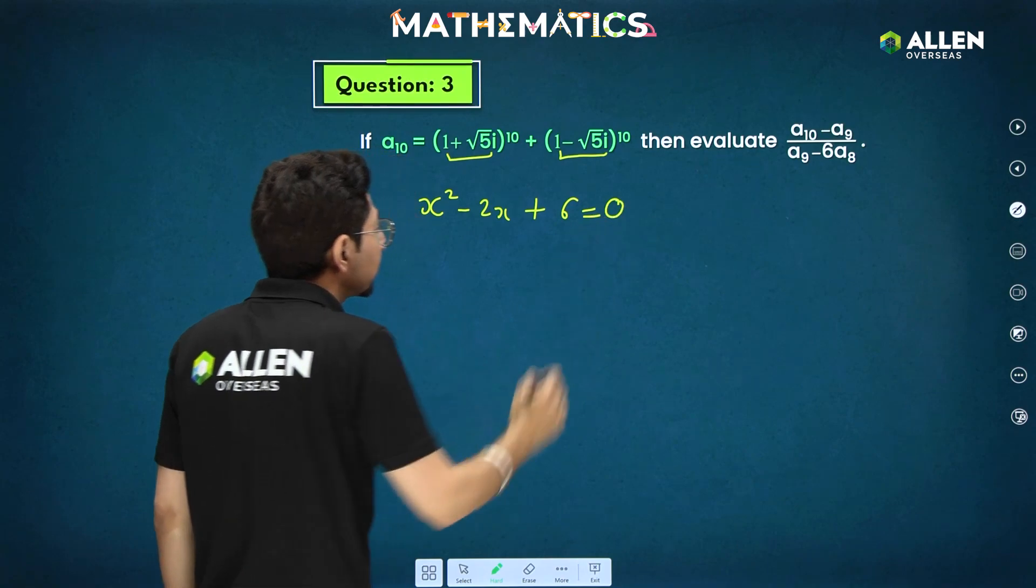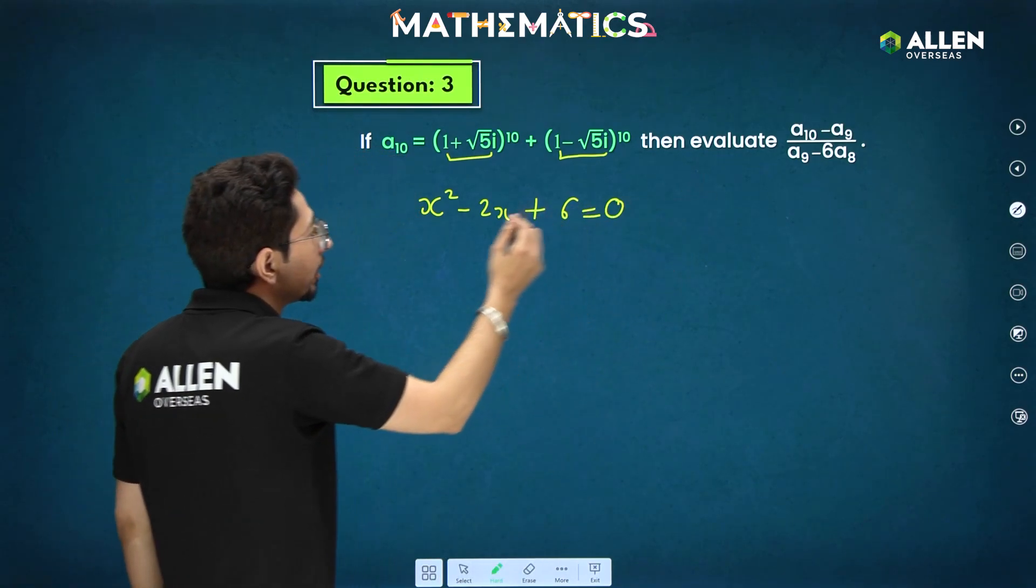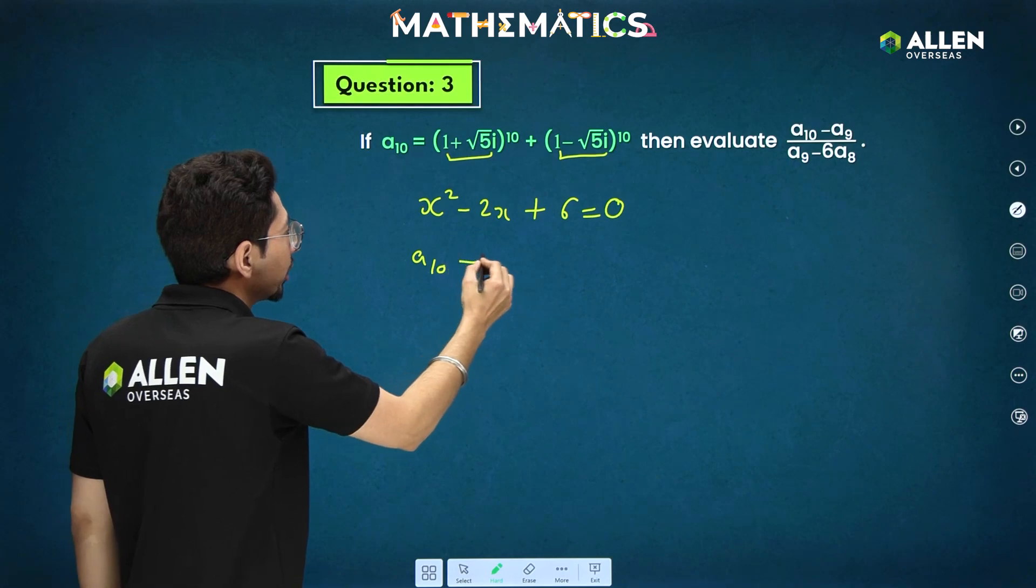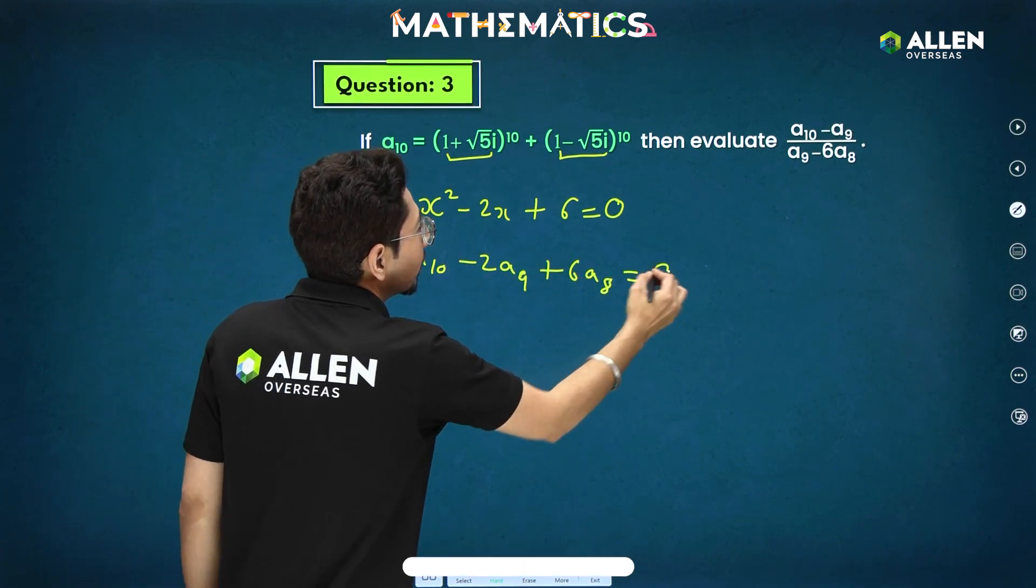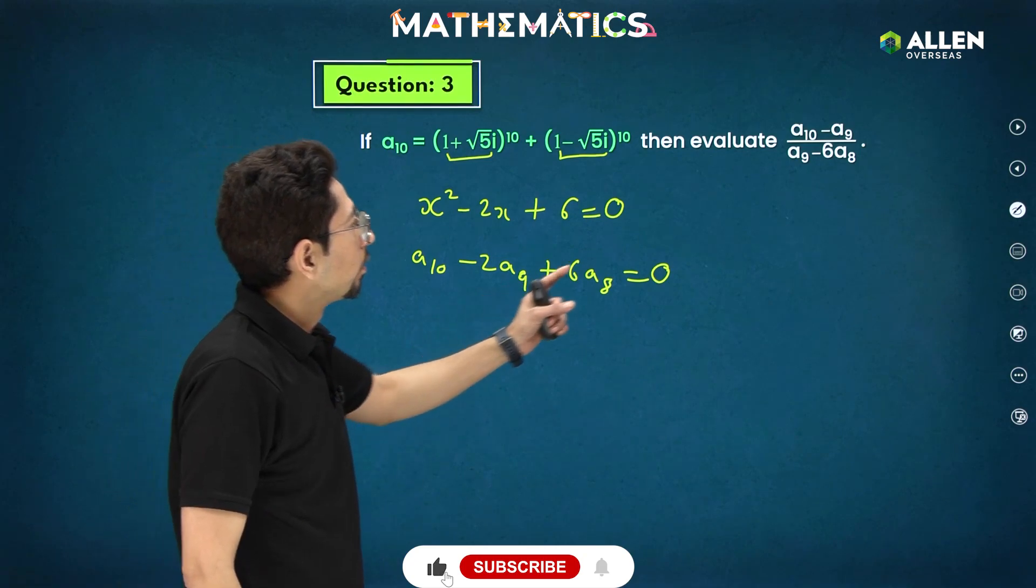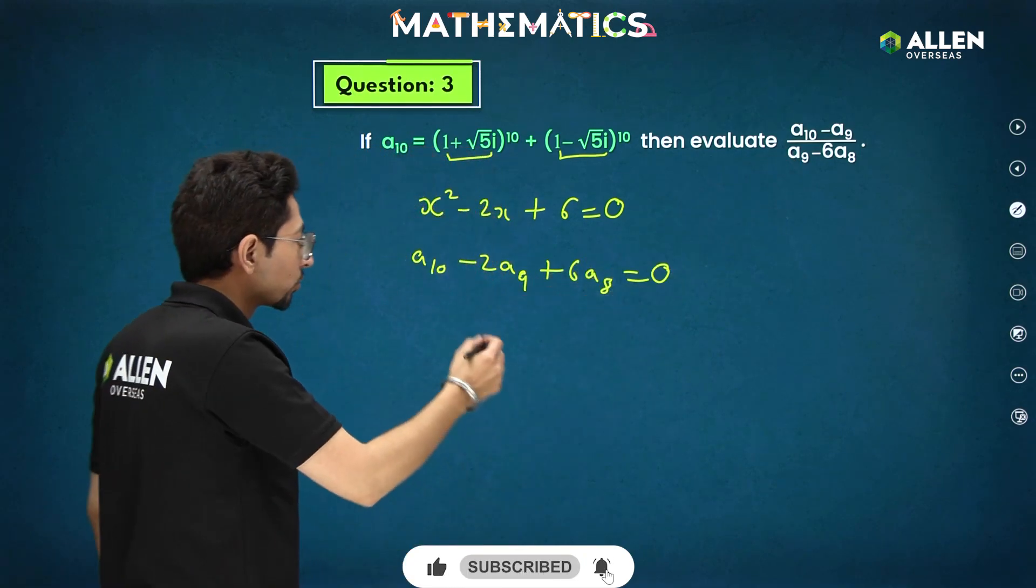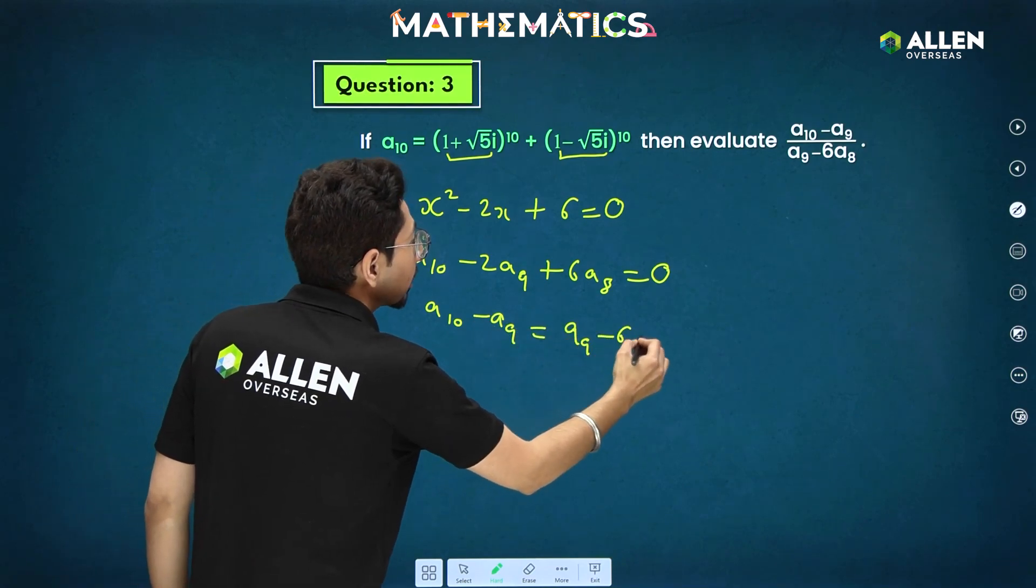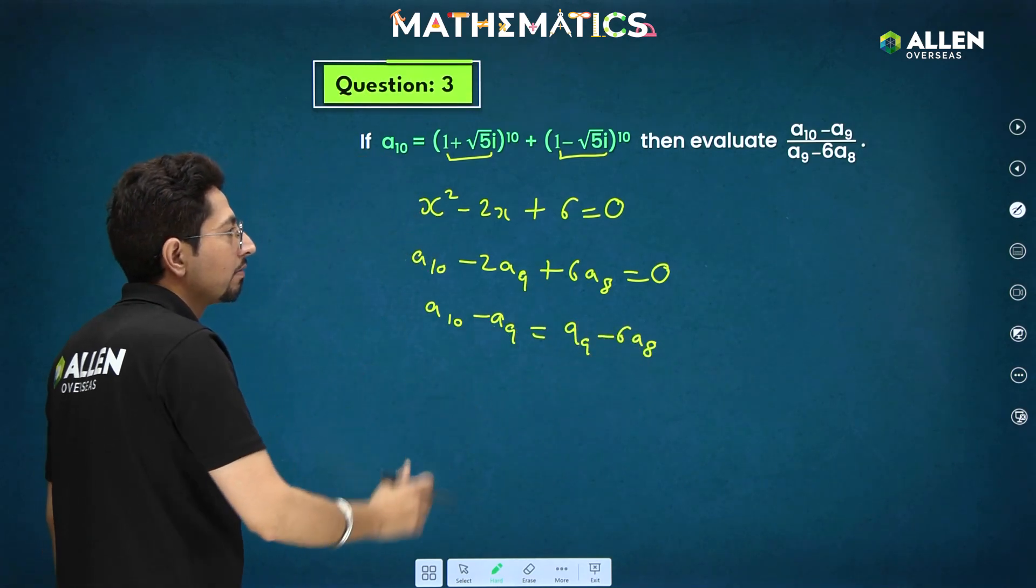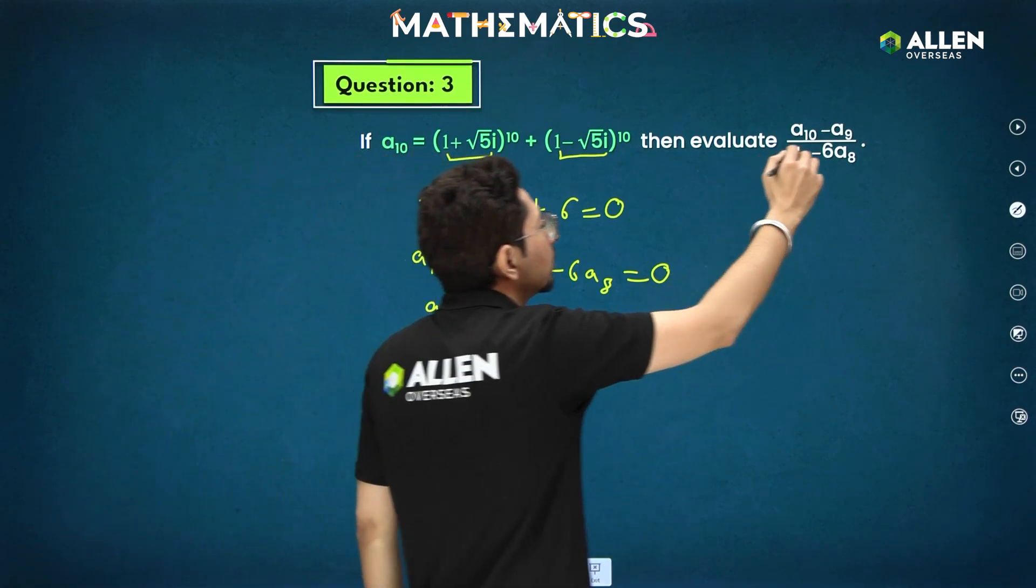So this part is the quadratic equation. Again, what we require 10, 9, 8 only. So a10 minus 2a9 plus 6a8 will be 0. What has been done here? Okay, a9 has been separated out so we just have to separate it only. a10 minus a9 that will be equal to a9 minus 6a8. This value you just have to divide it will be 1 more. This part is 1.